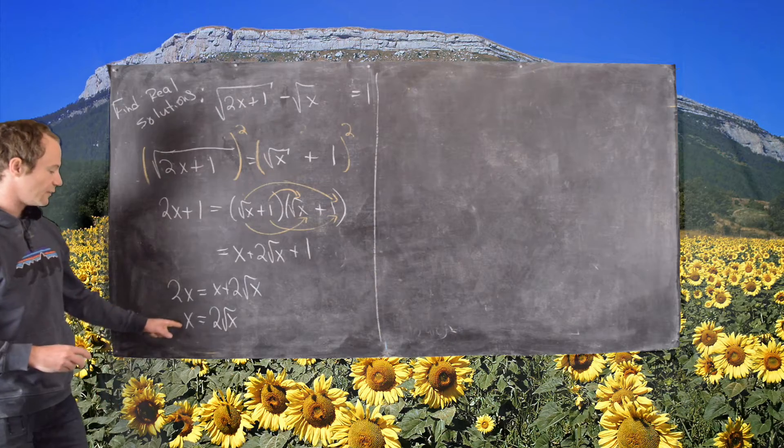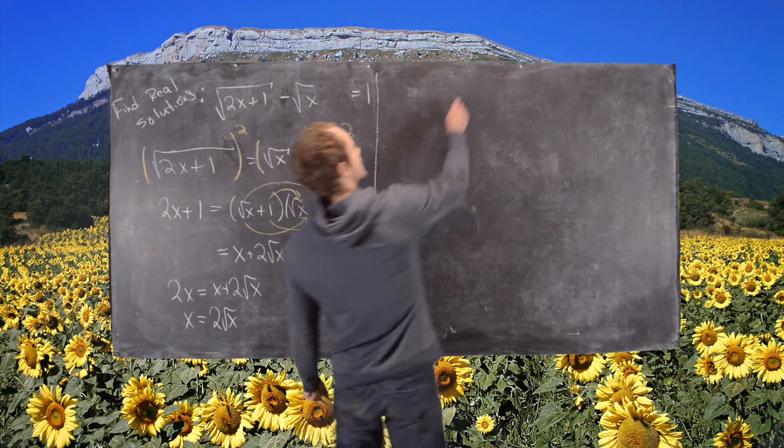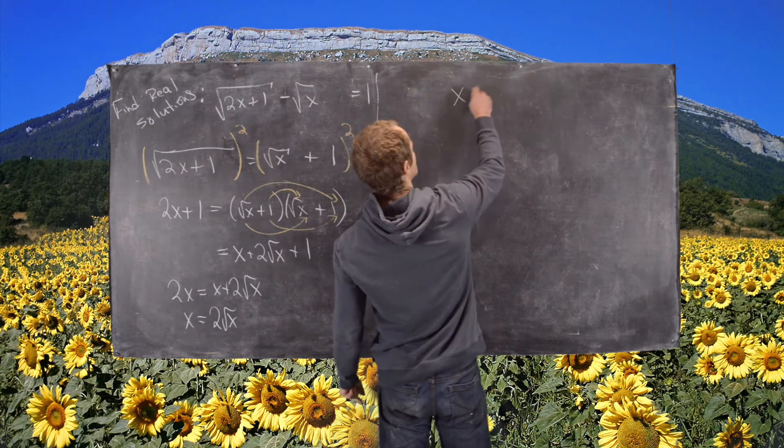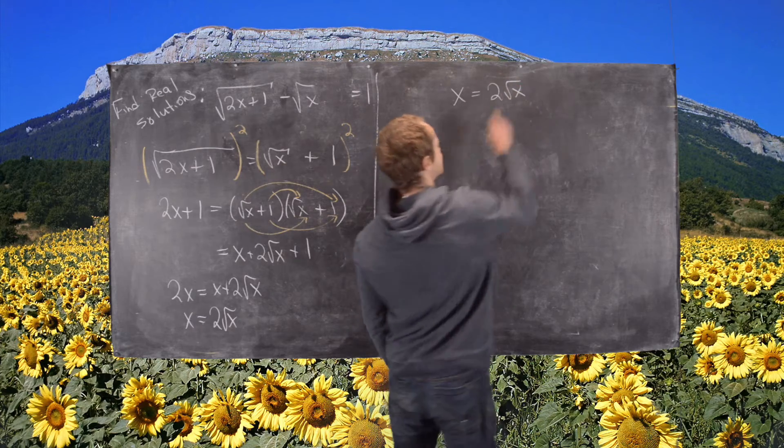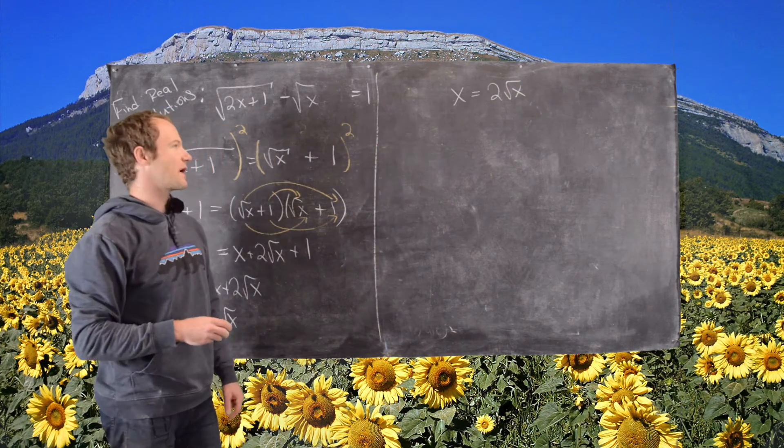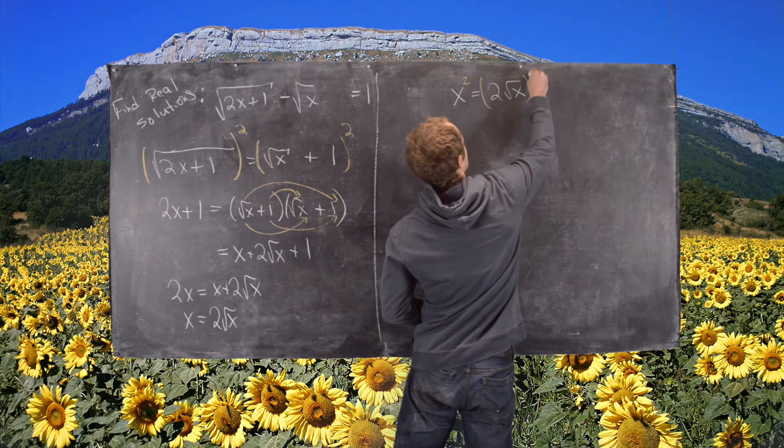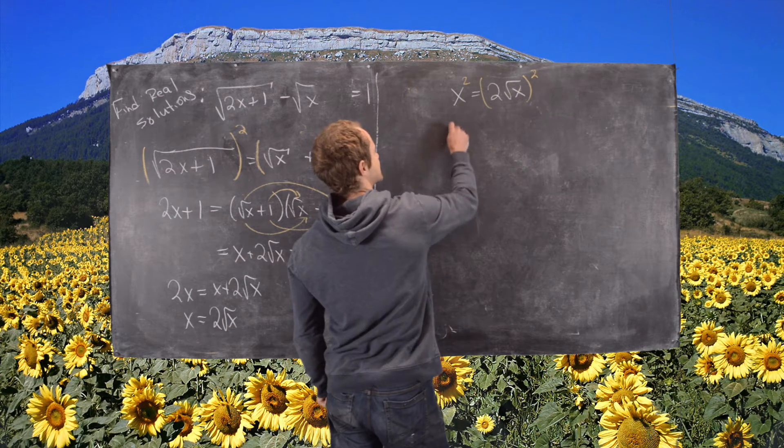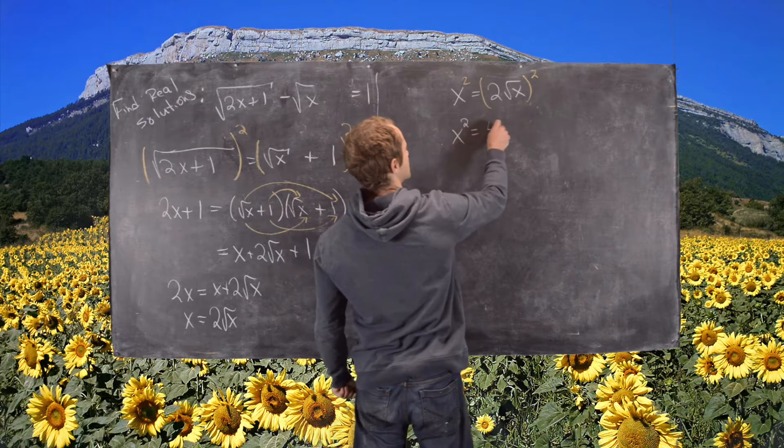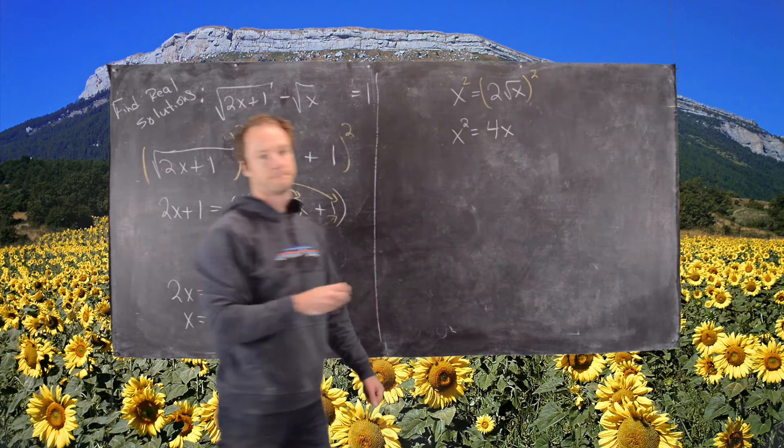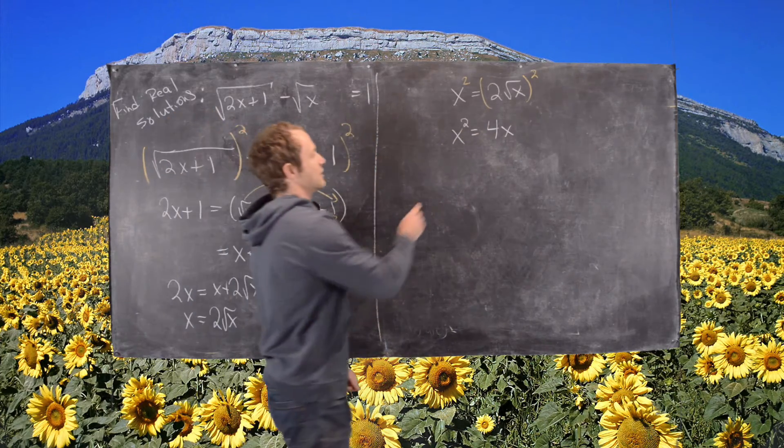We have x equals 2 times the square root of x. Now I'm going to do my second squaring step, so I'll square this side of the equation and this side of the equation. That's going to leave me with x squared equals 4x.